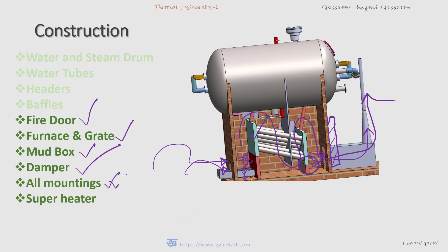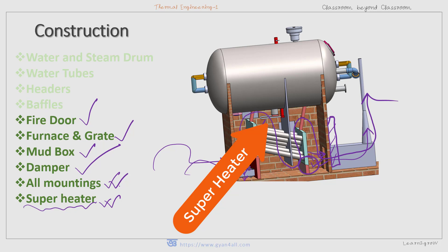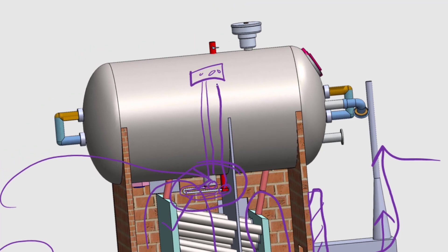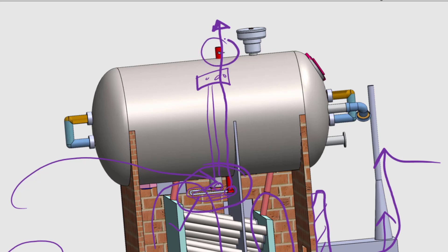The Babcock and Wilcox boiler should have all mountings attached for safe operation. There is also a superheater, which is an arrangement to produce superheated steam. Steam is collected and passed to one header through a pipe, then through a series of tubes which receive heat from the furnace or combustion chamber, and is collected in another header. This steam is then taken to the turbine or the required place through the steam stop valve.